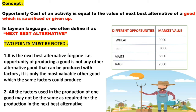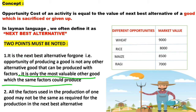Two points must be noted here. First, opportunity cost is the next best alternative foregone, which means to produce one good, we have to sacrifice other goods. And it is only the most valuable other good which the same factors could produce. Using those same factors, whatever is the most valuable good that could be produced — that is defined as the opportunity cost.